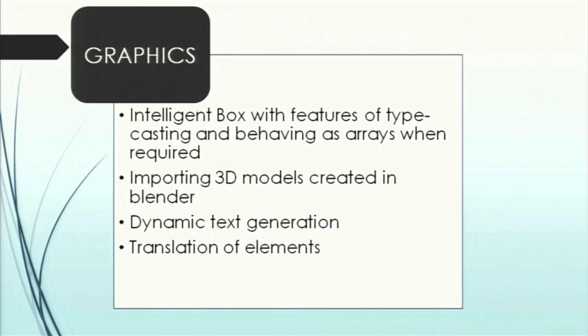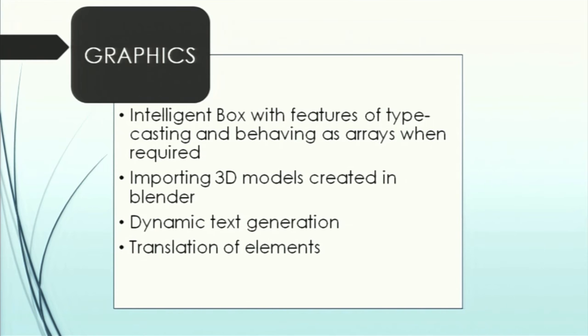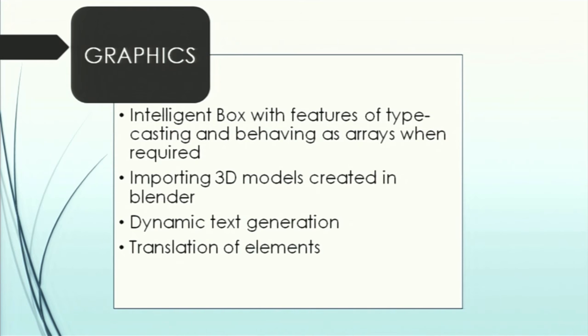Next, how did we do the graphics? For the graphics, we have created models in Blender. The models like the boxes, the Dumbo itself, and all the instances like accumulator, registers, have not been drawn in libgdx, they've been created in Blender and then imported. Drawing it with libgdx is difficult. Next, we have dynamic text generation. As you had seen, the text was generating as you were executing the command. We have translation of elements. Dumbo moves. That's the main animation part of libgdx to perform that.